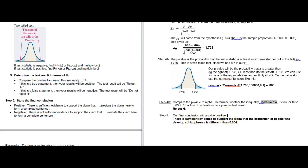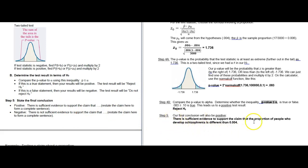For the final conclusion, since we had a positive test result, we say there is sufficient evidence to support the claim, and then restate the claim from step one. If it were a negative result, we would say there is not sufficient evidence to support the claim. So a positive test result means we do reject the null hypothesis and there is sufficient evidence. In this case, our conclusion is positive, so we did find sufficient evidence to support the claim.